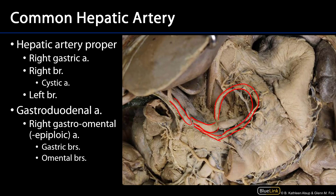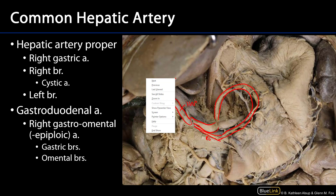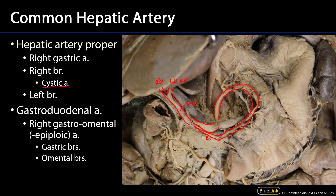Any of the gastric arteries — those are lesser curvature branches. You can see the right gastric artery there coming off from the hepatic artery proper. The hepatic artery proper then also has left and right branches, and that left branch of the hepatic artery proper is going to be the origin for the cystic artery, which we can see in a moment.